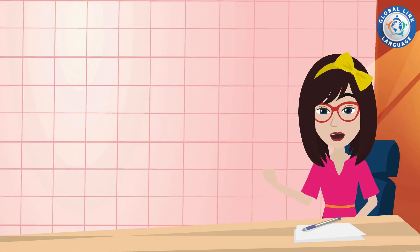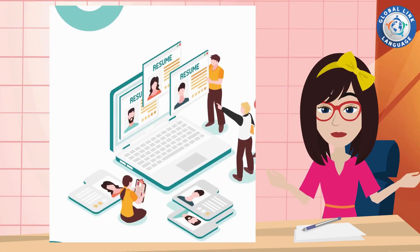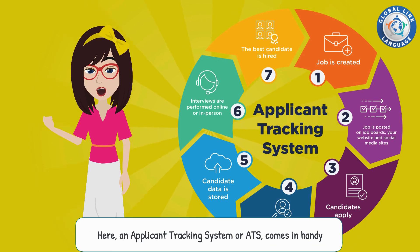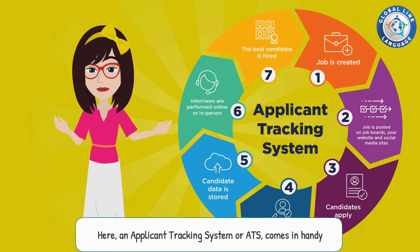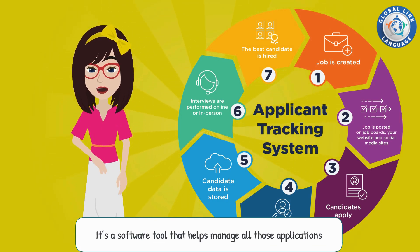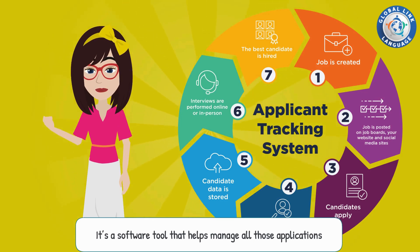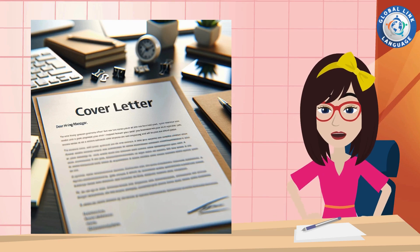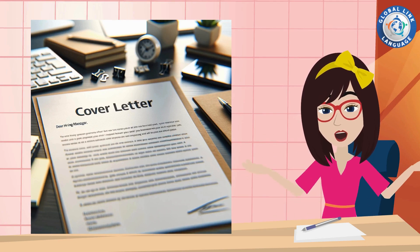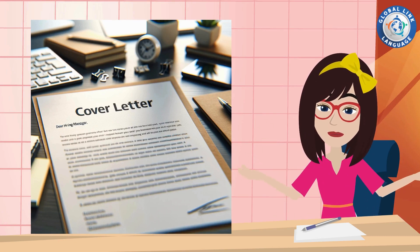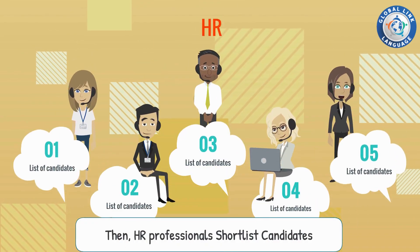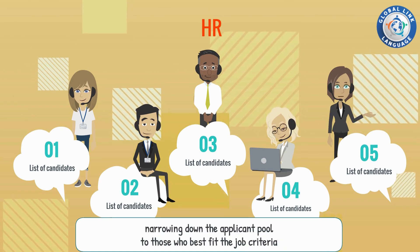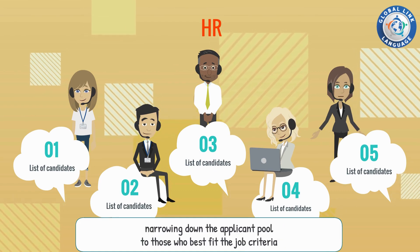After attracting candidates, we move to the application and screening process. Here, an applicant tracking system, or ATS, comes in handy — it's a software tool that helps manage all those applications. Part of the application is often a cover letter, the candidate's chance to personally explain why they're the best fit for the role. Then HR professionals shortlist candidates, narrowing down the applicant pool to those who best fit the job criteria.